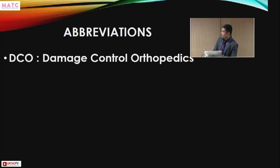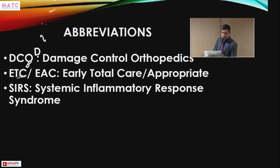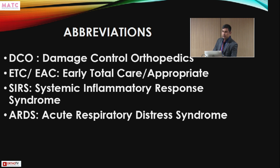The most common abbreviations we should know under this heading are DCO — Damage Control Orthopedics — ETC — Early Total Care — and EAC — Early Appropriate Care. There are also recent concepts like PRISM mentioned by Dr. Ketan up to 2017, and PISM — Prompt Individual Surgical Management. Other abbreviations we should know are SIRS and ARDS.